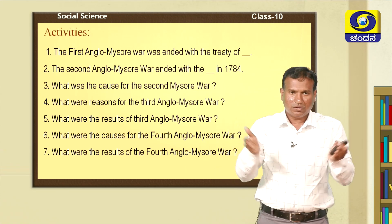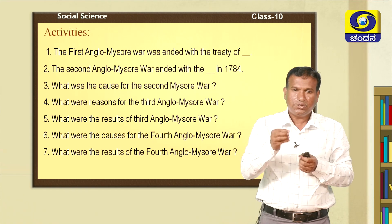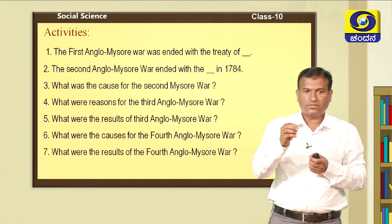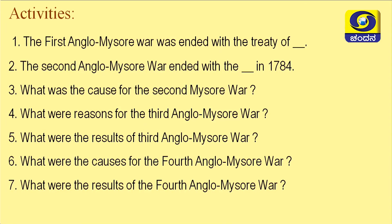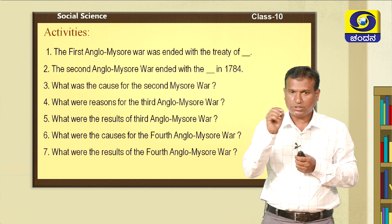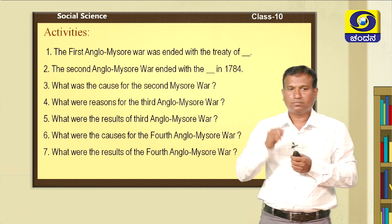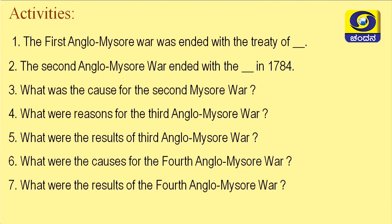My students, I would like to give you a few questions to learn and write answers for the next class. The First Anglo-Mysore War ended with the Treaty of Madras. The Second Anglo-Mysore War ended with the Treaty of Mangalur in 1784. Important questions: What were the causes for the Second Anglo-Mysore War? What were the reasons for the Third Anglo-Mysore War? What were the results of the Third Anglo-Mysore War? What were the causes for the Fourth Anglo-Mysore War? What were the results of the Fourth Anglo-Mysore War?